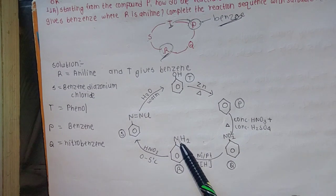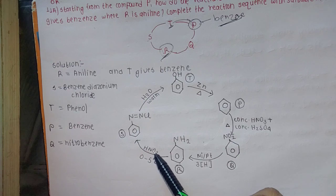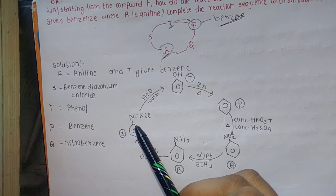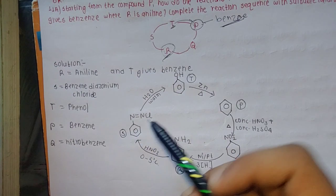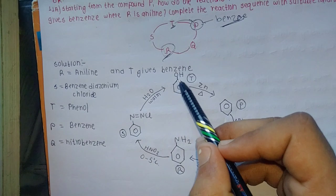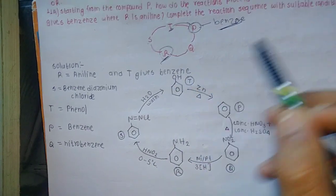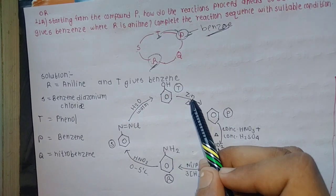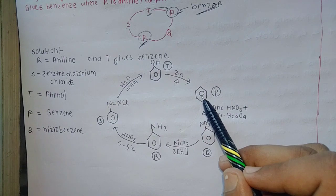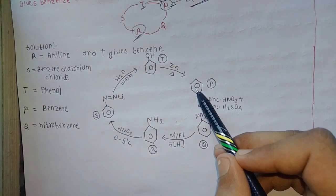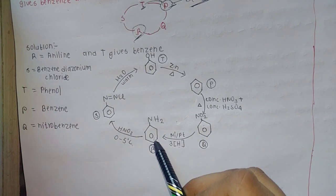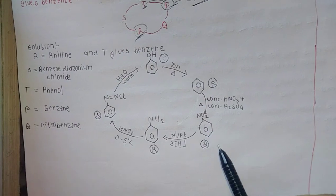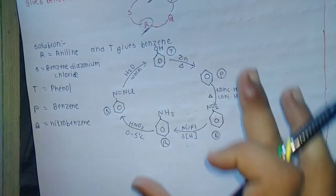When aniline is treated at 0 to 5 degrees Celsius, with heat, it reacts to form benzene diazonium chloride. Benzene diazonium chloride is used under certain conditions related to compound P. Phenol reacts further to give benzene. Benzene with concentrated HNO3 and concentrated H2SO4 gives nitrobenzene. So P is benzene.